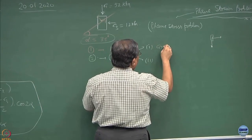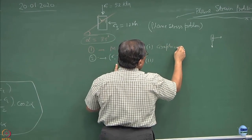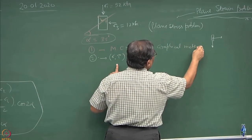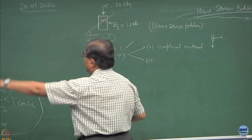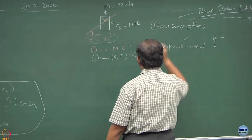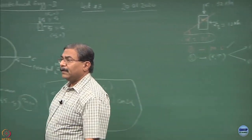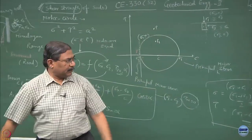I can obtain sigma and tau by two methods. One is the graphical. This is what we have been doing, taking the help of the Mohr circle. Second is analytical.